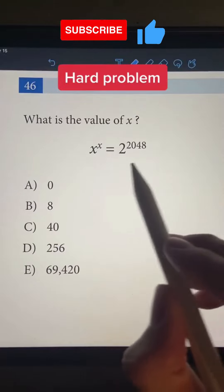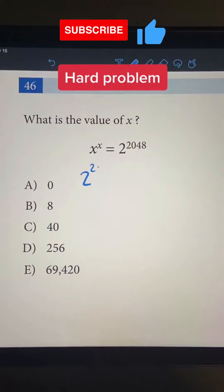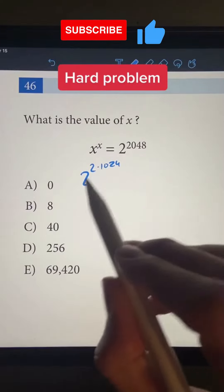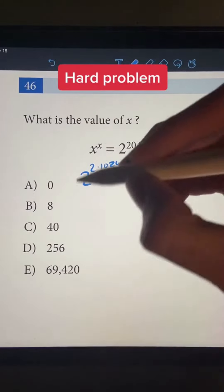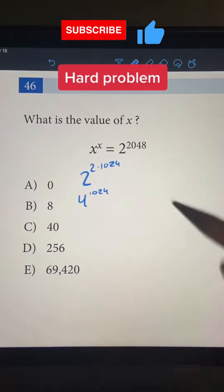The first thing I'm going to do is rewrite this exponent as 2 to the power of 2 times 1024. What that does is it lets us rewrite this as a new base. 2 squared is 4, so our new base is 4. We still have 1024 as our exponent.